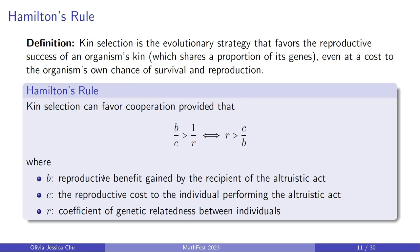This leads to Hamilton's rule, which says that I will only act altruistically toward you if I am sufficiently related to you: r·b > c, where r is the coefficient of genetic relatedness, b is the benefit to the recipient, and c is the cost to the actor. Kin selection and its relation to genetic success was widely accepted in evolutionary biology for a long time, and the honeybee was a textbook example.